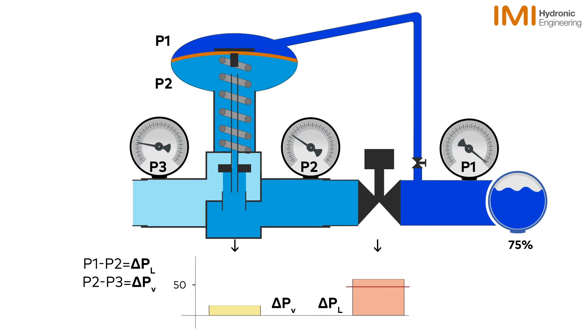The DPCV will act upon this change by closing down, thus increasing delta PV and decreasing delta PL back to set point.